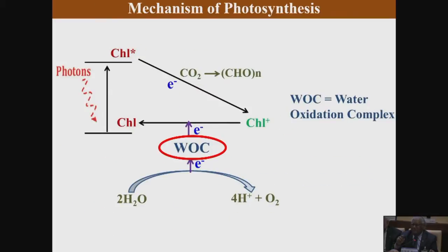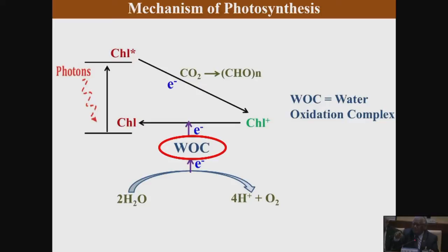What happens in simple words in photosynthesis: chlorophyll absorbs photons, an electron gets excited, and then it loses an electron after excitation, giving a positively charged species. Because of that, it pulls out an electron by the WOC — the water oxidation complex, which is an inorganic unit — and that in turn pulls out an electron from water and gives oxygen.